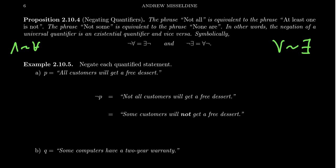Take the statement P: 'all customers will get a free dessert.' Here 'all' is our universal quantifier. If we negate that, we get 'not all customers will get a free dessert,' which is equivalent to saying 'some customers will not get a dessert.' If not everyone gets one, then at least someone didn't get one — that is the proper negation of the universal quantifier.